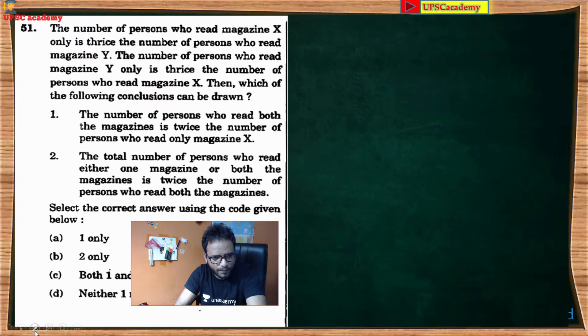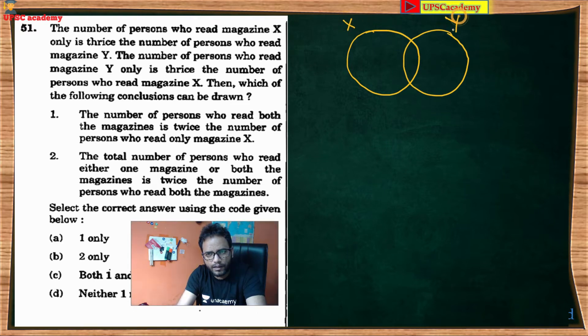Statement dekhiye, agar hum dhyaan de to hum ise Venn diagram se kar lete hai. Venn diagram banana hai - yahan par X magazine padhne wale hai, Y magazine padhne wale hai. Isko maan lete hai a, b, and c. A maan lo isko, b maan lo isko, c maan lo.